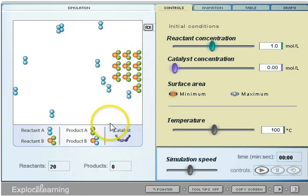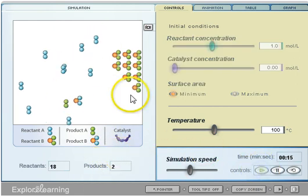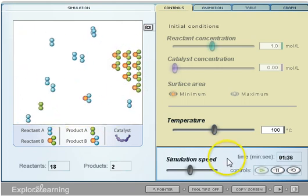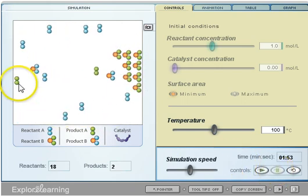And when students are ready to begin they can start the simulation and see that as they collide you get some changes. And now we have product A and product B created and another one was just made.